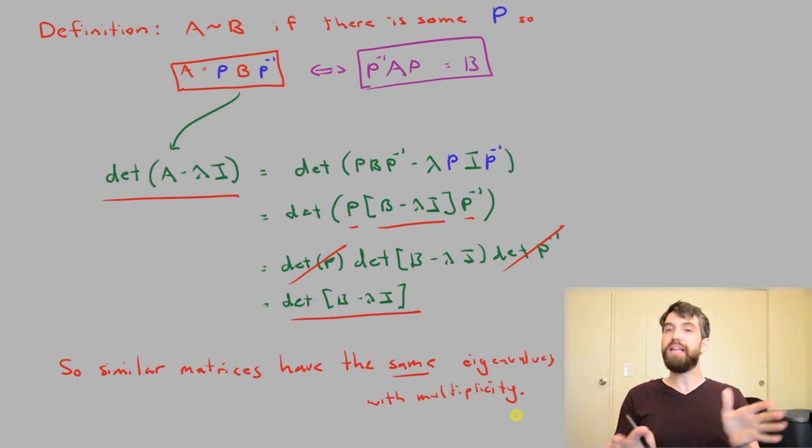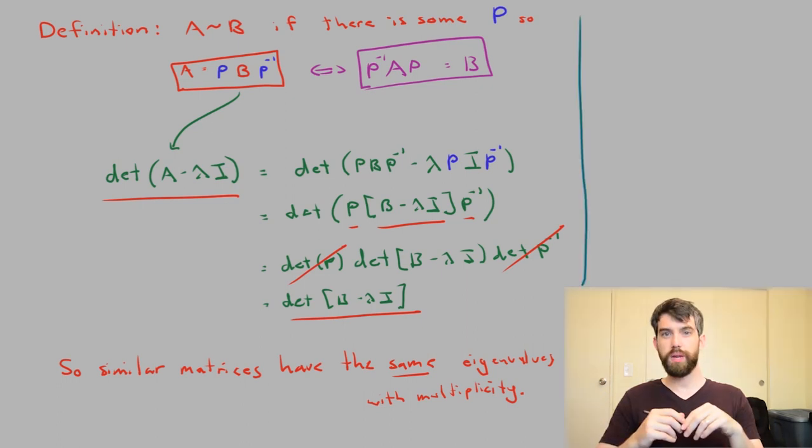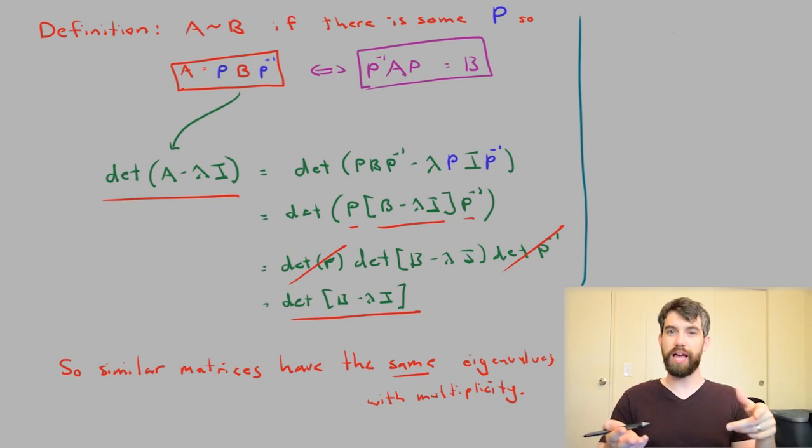There are many different properties like this where similar matrices result in similar properties, but we have to be a little bit careful. For example, eigenvectors do change. It's the eigenvalues that remain the same. Now, these expressions like P inverse AP equals B can seem at first glance a little bit strange. So I want to give you an example of one way that expressions like this might occur. I want you to think about change of basis.